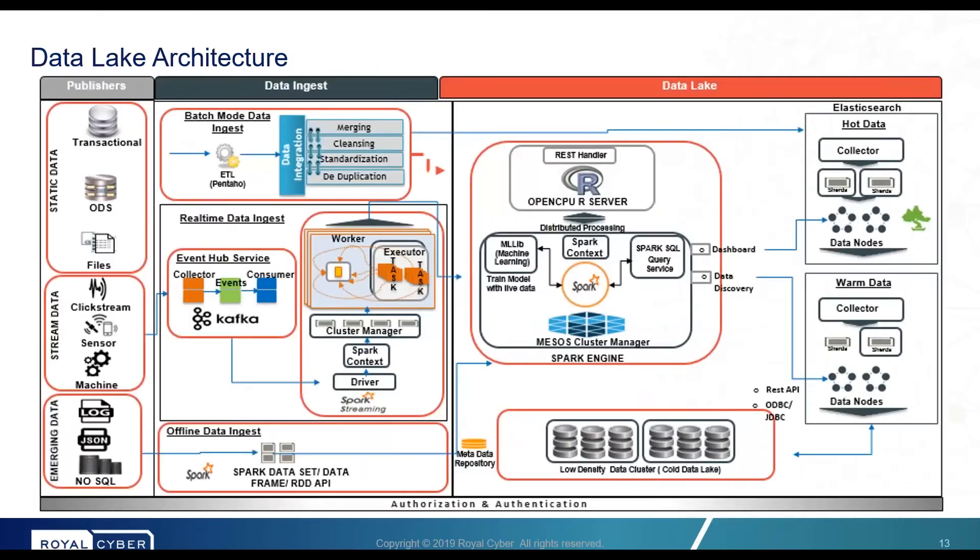Now let's look at the data lake architecture. As we see here, there are multiple publishers or different kinds of sources. This is the raw layer or the sourcing layer where your present data exists. It need not be any structured process. Through the data ingest process, you can do batch ingest, real-time ingest, or offline ingest.